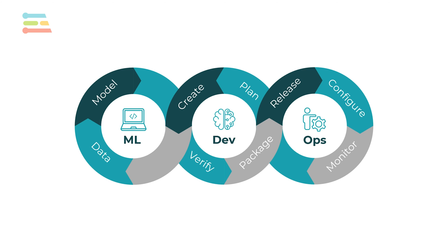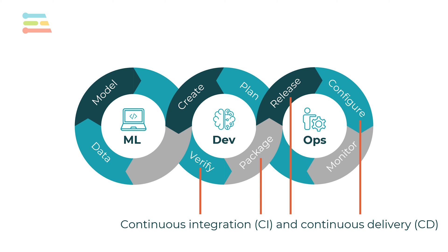The one part we did not discuss yet when it comes to deployment is the software development side, as you often need to have an application written to use your trained model effectively. While the planning and creation of application code is often done by humans, the verification, packaging, releasing, and configuration can often be automated. Such automation can be accomplished with sets of tools and techniques known as continuous integration and continuous delivery, or CI/CD.